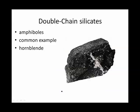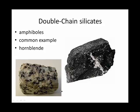Double chain silicates include the amphiboles, a family of silicates. The most common example of an amphibole is hornblend. Hornblend is rarely found alone, but you've seen it a lot as those little black specks in granite.